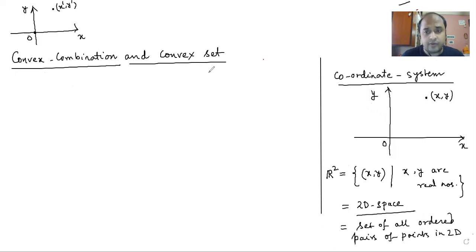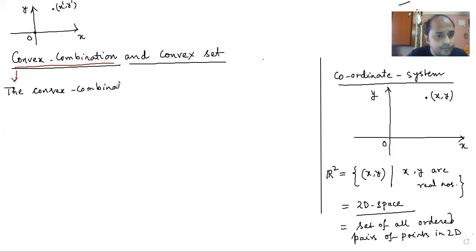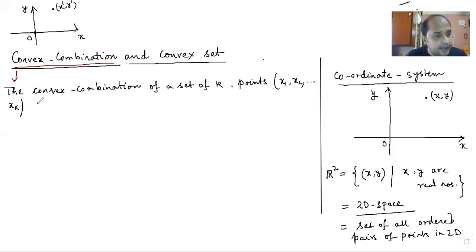Now I am going to write the definition of convex combination. The convex combination of a set of k points — which we name x₁, x₂, ..., xₖ — in Rⁿ space. Rⁿ space: a point in Rⁿ looks like (x₁, x₂, ..., xₙ) where each xᵢ belongs to R, meaning all xᵢ are real numbers, and i goes from 1 up to n. This is the generalization of R².